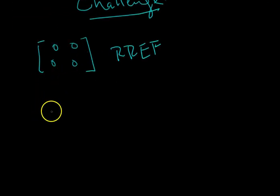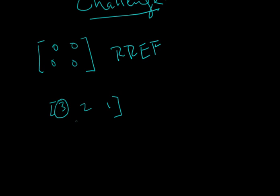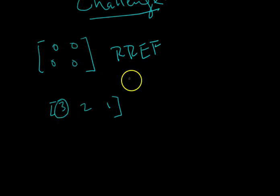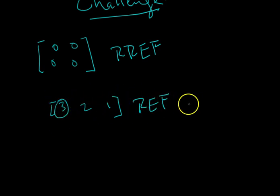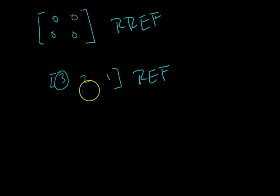What about this matrix: 3, 2, 1 — it's a one-by-three matrix. Follow the procedure: identify your pivot, the first non-zero entry in the row. Are there zeros below it? Yes. Do they go top-left to bottom-right? Yeah, there's only one. There's no row of all zeros. So this is in row echelon form. What about reduced row echelon form? Well, the pivot isn't equal to one, so it's not in reduced row echelon form, but it is in row echelon form.